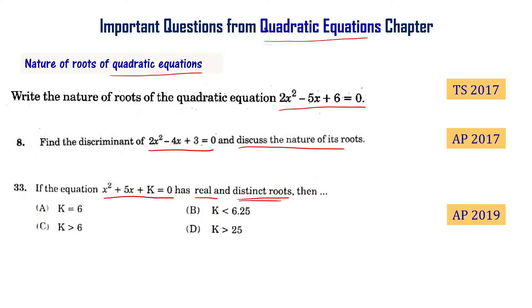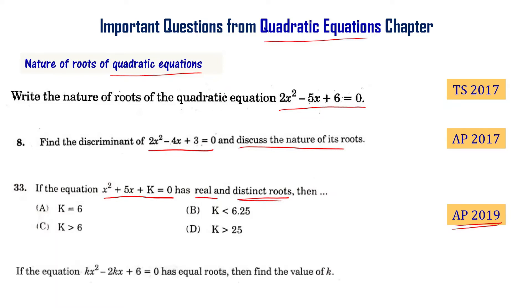That is from the AP final exam 2019. If the equation kx² - 2kx + 6 = 0 has equal roots, then what is the value of k? That is from the Telangana final exam 2018. In this video, I am going to solve all these problems. Stay tuned.